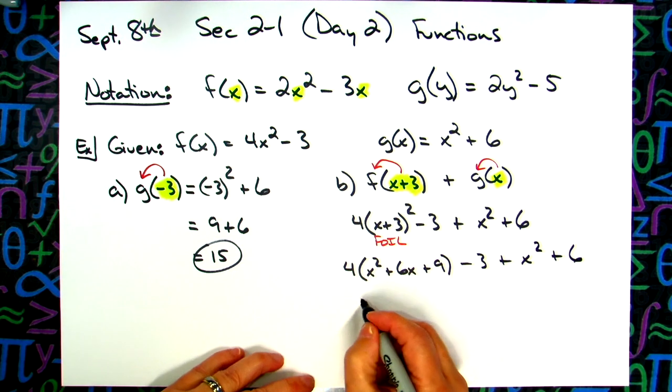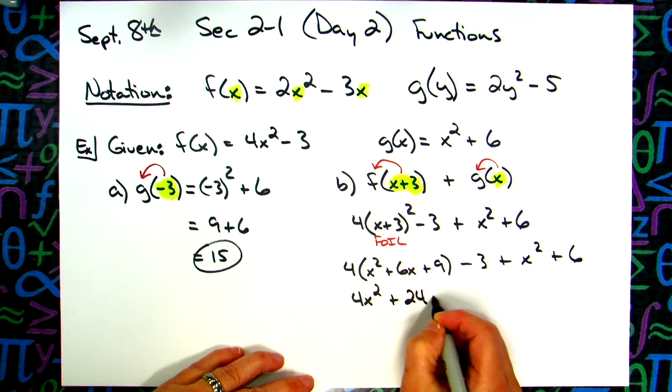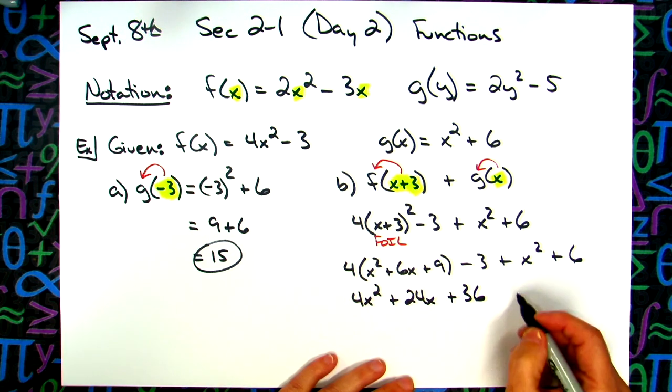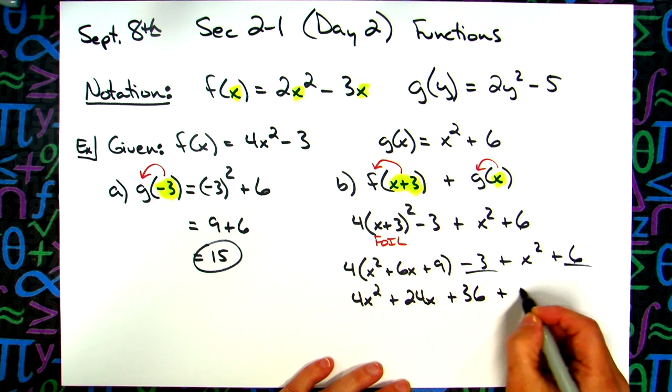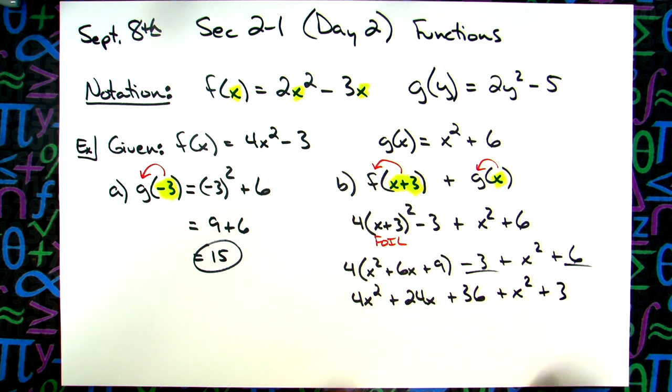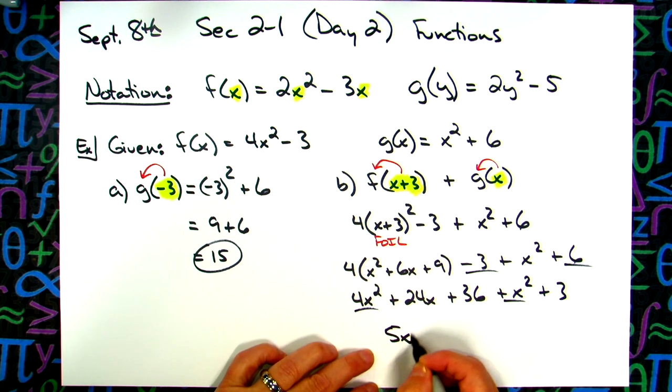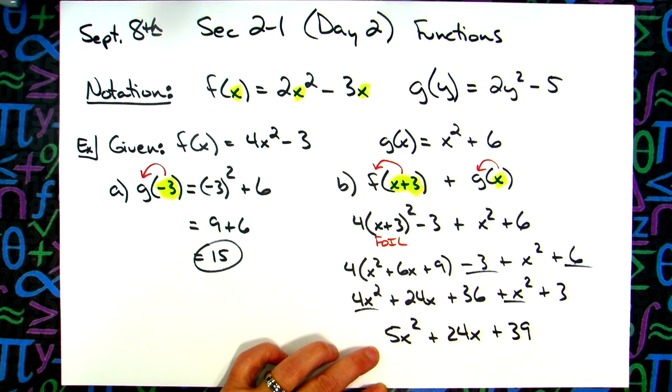I'm going to have the 4 out in front, plugging in x plus 3 for that. Then I'm going to write the minus 3 down. I'm going to add to that the entire g function, basically, so x squared plus 6. And then it's no more than going through and algebraically fixing this. I would foil it out.